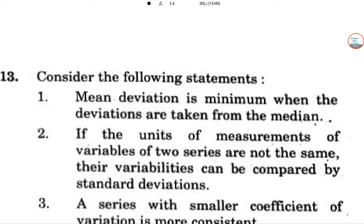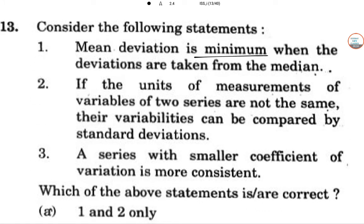Next, consider the following statements. Mean deviation is minimum when the deviations are taken from the median. So mean deviation about median is the most easy, yes. So this is true.